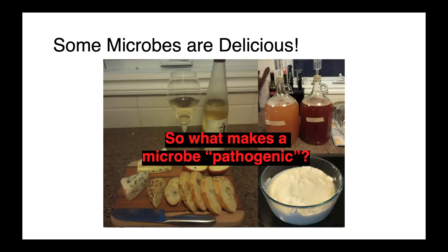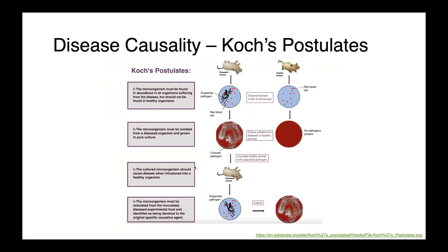What is it that makes some microbes delicious and other microbes pathogenic? When we're discussing pathogenicity and the ability of an organism to cause disease, we really need to start with Koch's Postulates. This is our prototypical model for demonstrating disease causality.